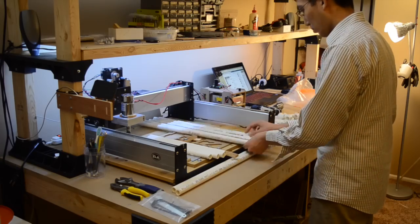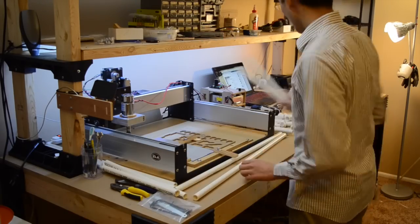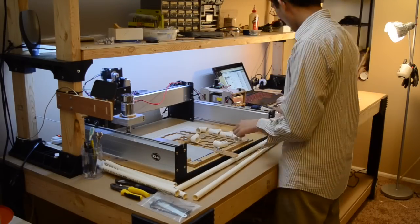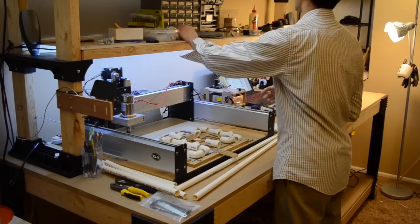As it is, the stock Shapeoko 3 barely fits through a standard width doorway, so building a proper enclosure for it was out of the question. I didn't really have the time to make one properly anyway. Instead, I went with the cheapest and quickest option, a PVC frame.